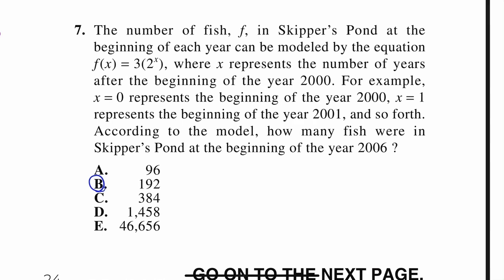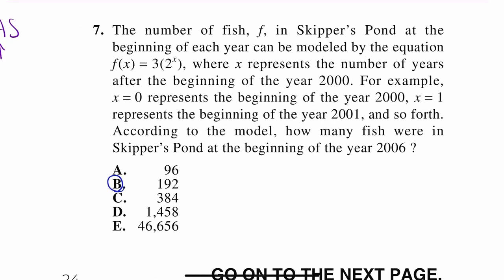And our last one on this page. The number of fish, F, in Skipper's Pond at the beginning of each year can be modeled by the equation f(x) = 3(2^x), where x represents the number of years. I'm going to go ahead and underline that. Number of years after the beginning of the year 2000. So, that's what that represents. For example, x = 0 represents the year 2000. x = 1 represents the year of 2001, and so forth. According to the model, how many fish were in Skipper's Pond at the beginning of the year 2006?